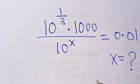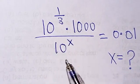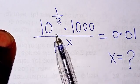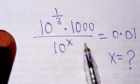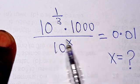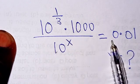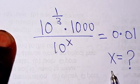Hello good viewers, you are highly welcome. Let's solve this exponential equation: we have 10 to power 1 over 3 multiplied by 1000 divided by 10 to power x equals 0.01. So we want to find the value of x.